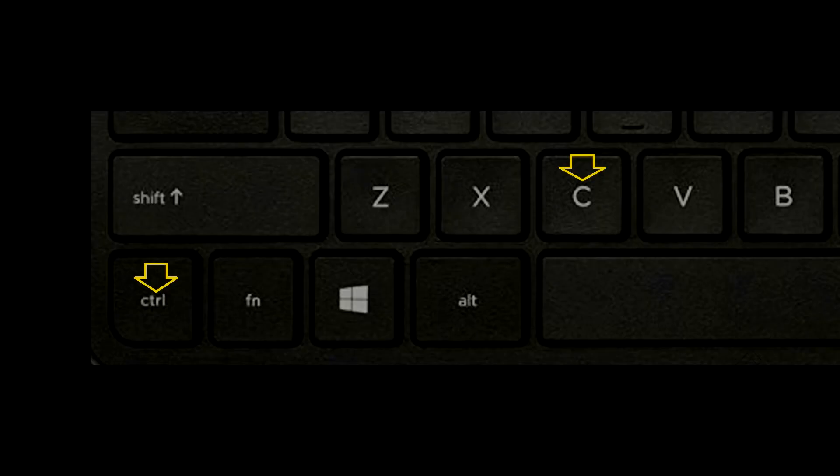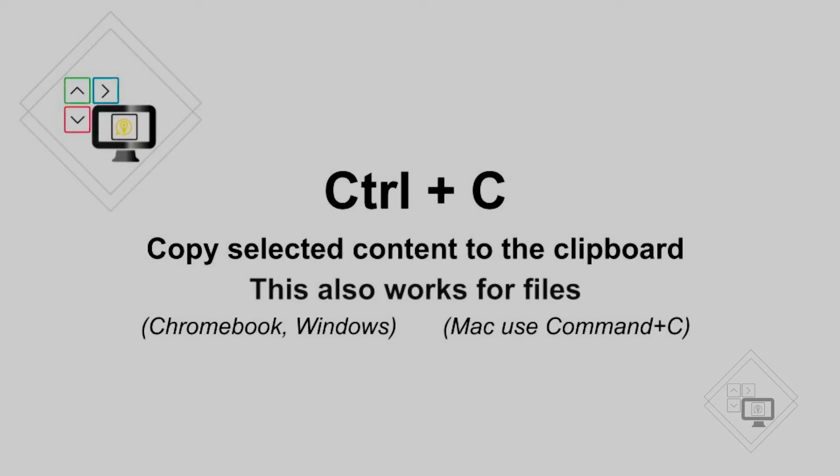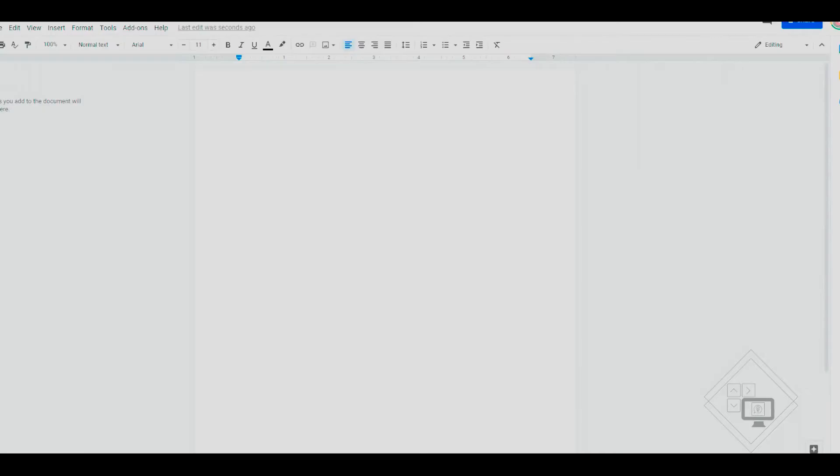Let's say you want to copy some content such as text or images for your research paper, or maybe you want to copy a website address to paste in an email. You can also copy text from your favorite social media sites. The list goes on when using the keyboard shortcuts for copy and paste. I'll go ahead and open a new Google Doc in the web browser to find content for a research paper.